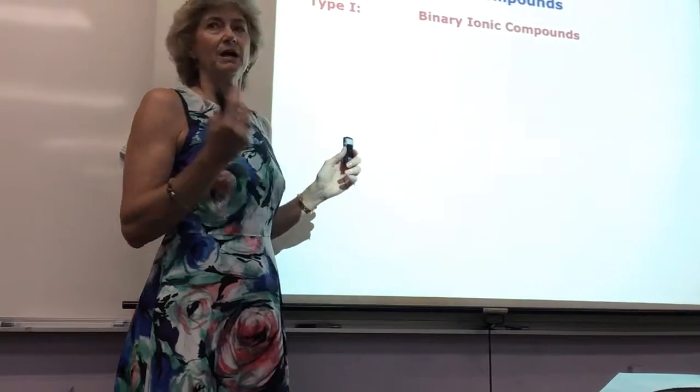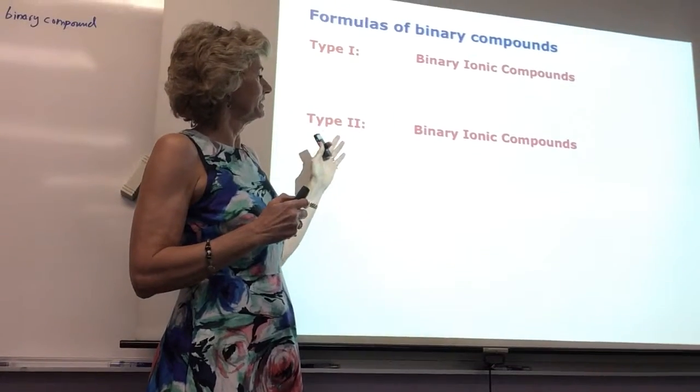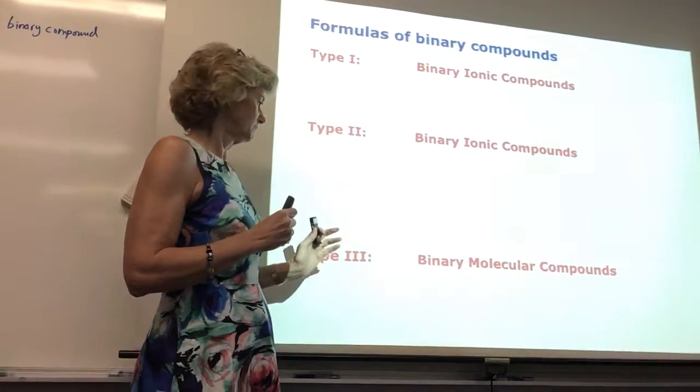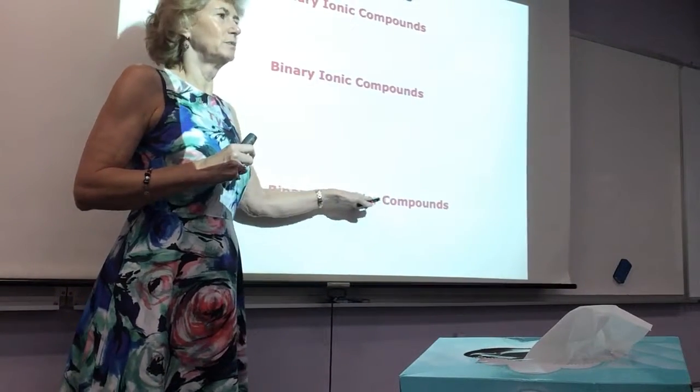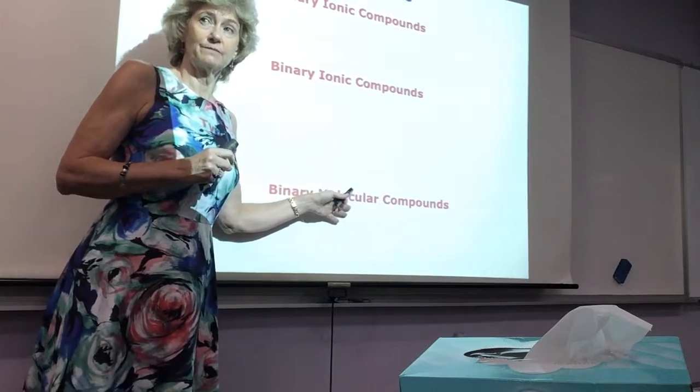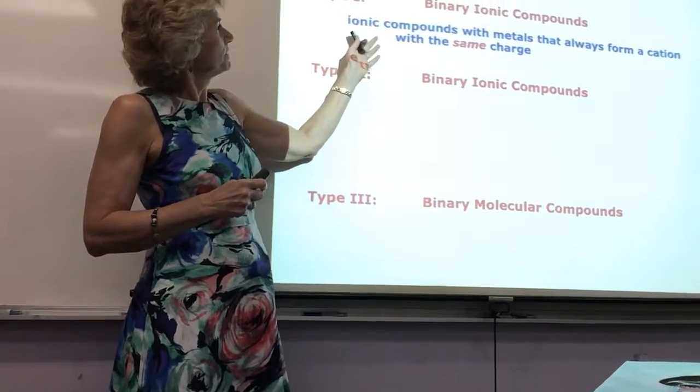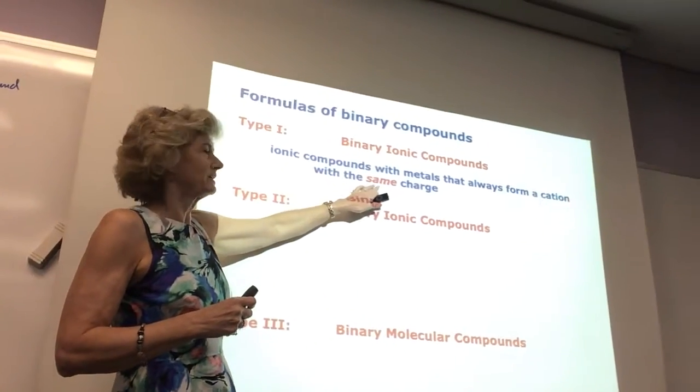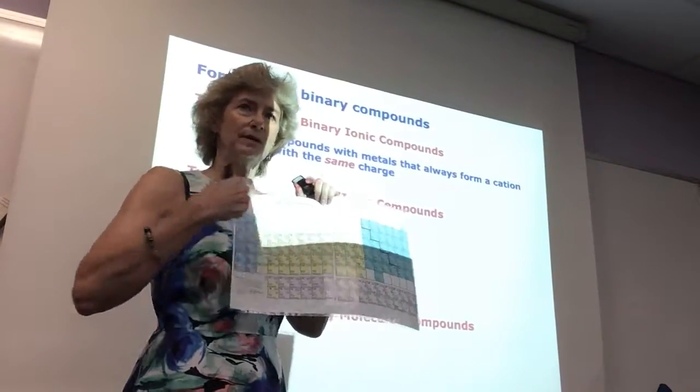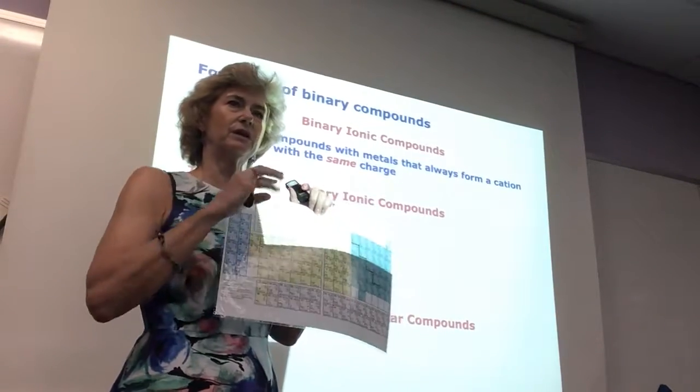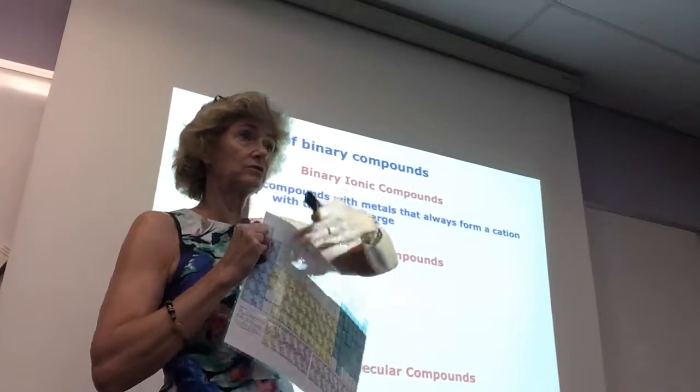So binary compounds just have two things. Binary means two. So type one is binary. Type two is binary ionics, but with a little added special thing. And type three are molecular. They're not ionic. They form molecular bonds, which are covalent. But you already have one of each of these at your disposal. You already know one. So the binary ionics are the metals that always make a cation of the same charge. That is group one, group two, and aluminum. It's always positive one, positive two, and positive three. Always. So those, they only have one charge. The charge that is their group number.